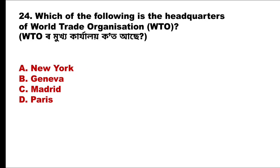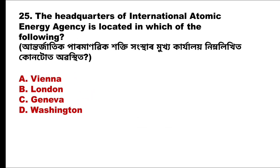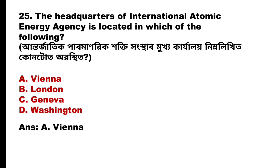Question 24: Which of the following is the headquarters of the World Trade Organization (WTO)? The answer is option B, Geneva. Question 25: The headquarters of the International Atomic Energy Agency (IAEA) is located where? The answer is option A, Vienna.